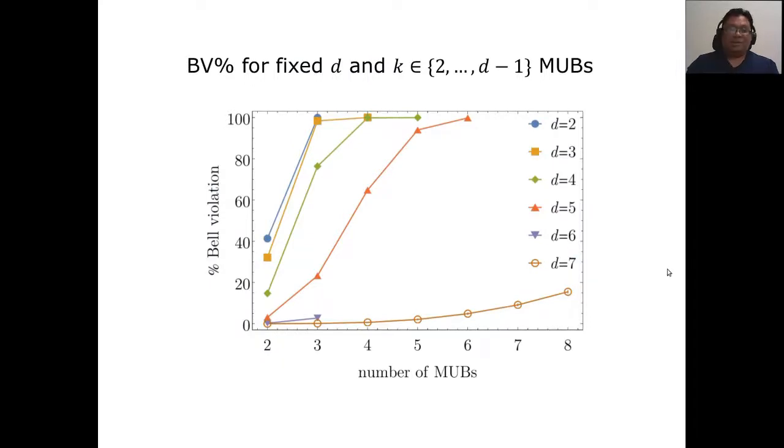Here is a plot of the probability of Bell violation for different dimensions. Each line represents a given Hilbert space dimension, and then we vary the number of MUBs that Alice and Bob will measure. As you might expect, there's an increasing trend, because if Alice and Bob perform more MUBs, in some sense, they are able to consider more possible combinations. Therefore, you sort of increase the probability that you can violate some Bell inequality.